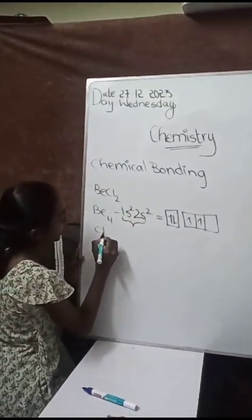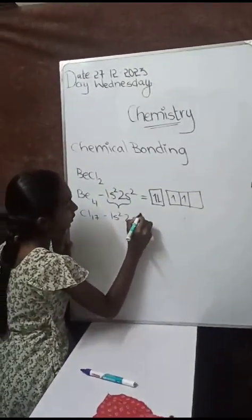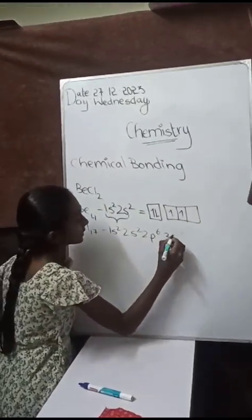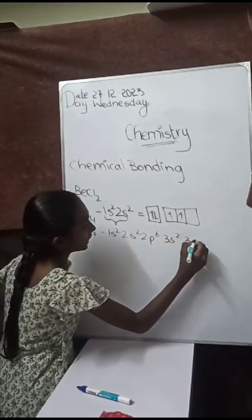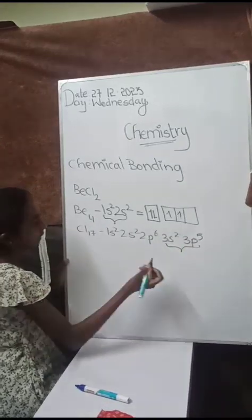Now, Cl, chlorine, it is atomic number 17. 1s2, 2s2, 2p6, 3s2, 3p5. We are going to take the last two shells. How to write now?